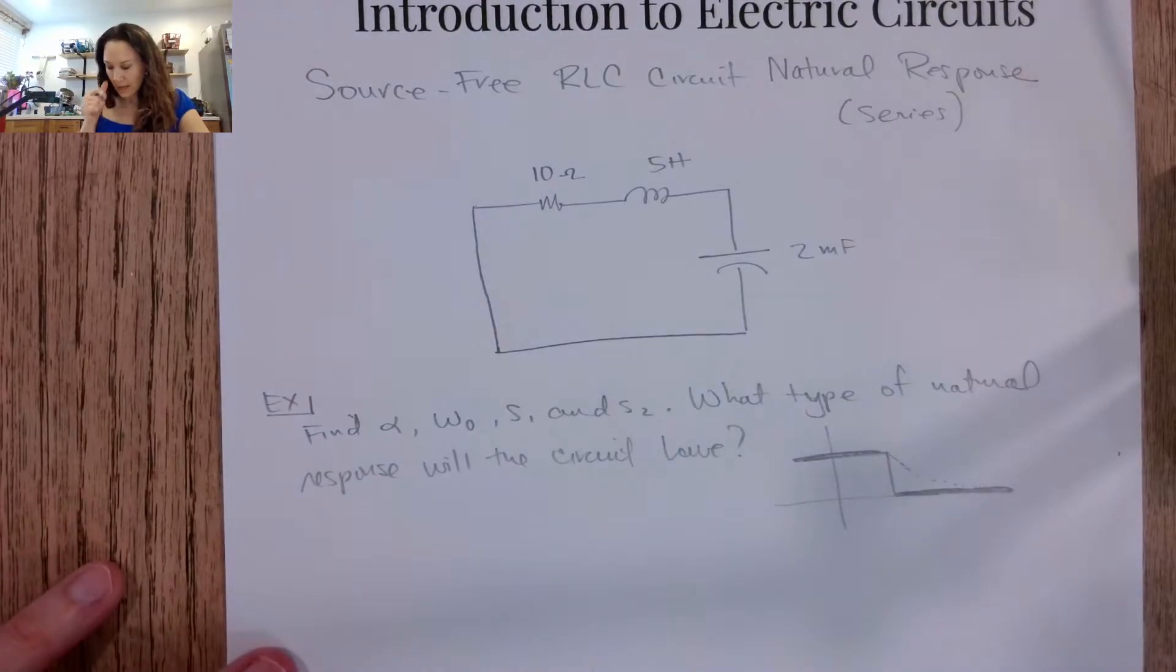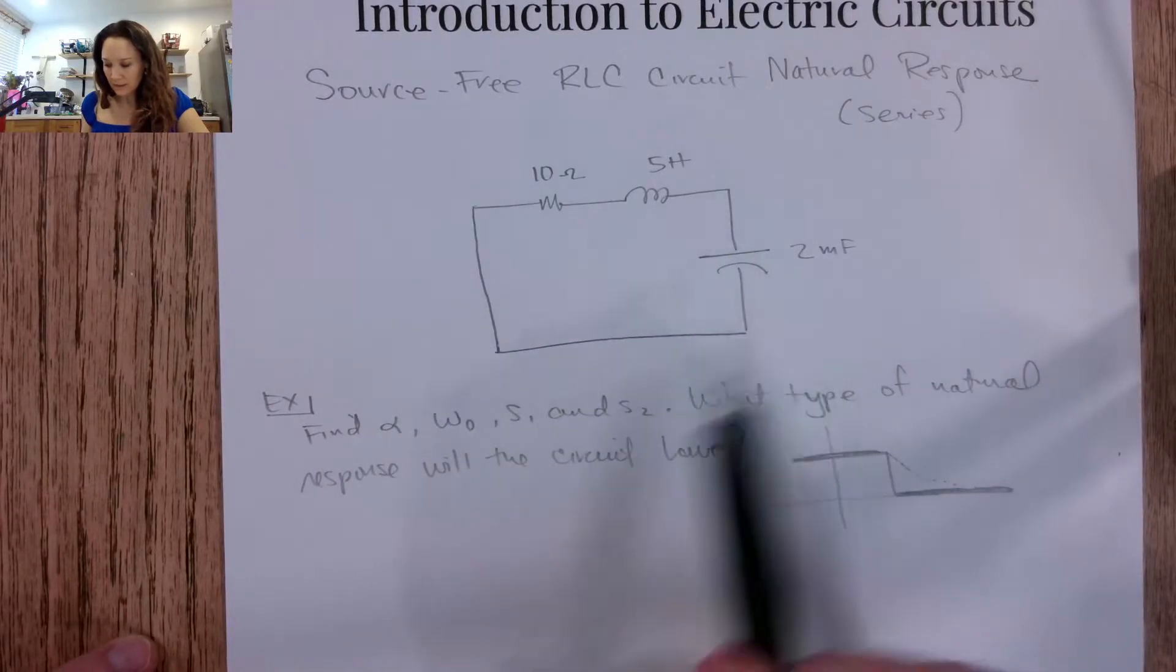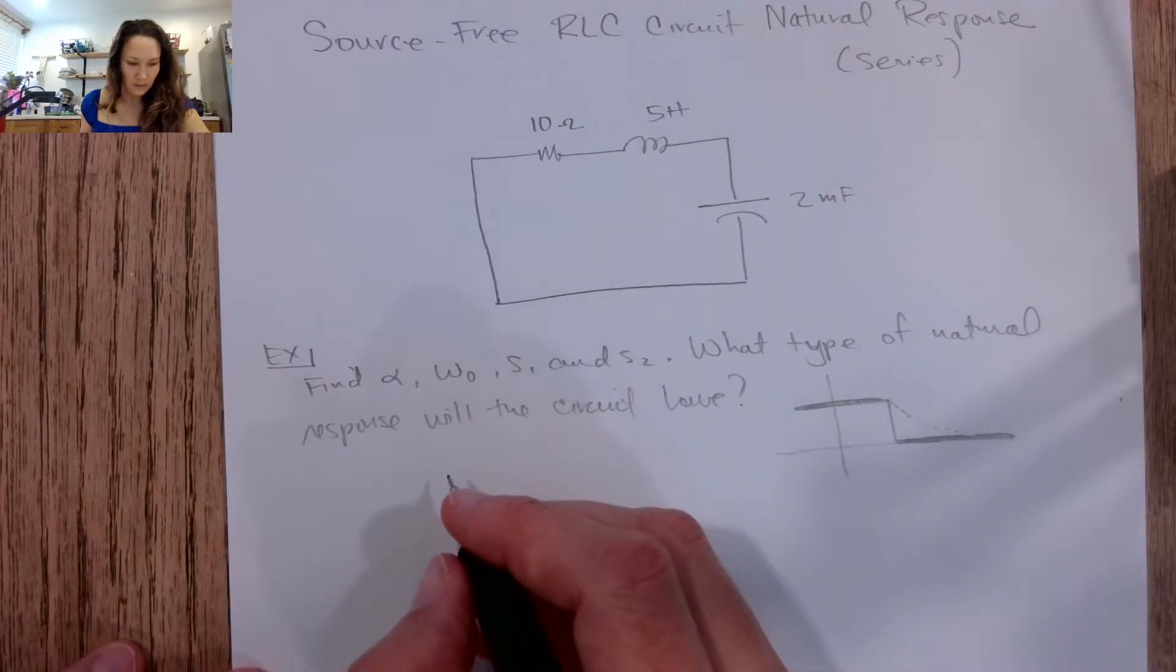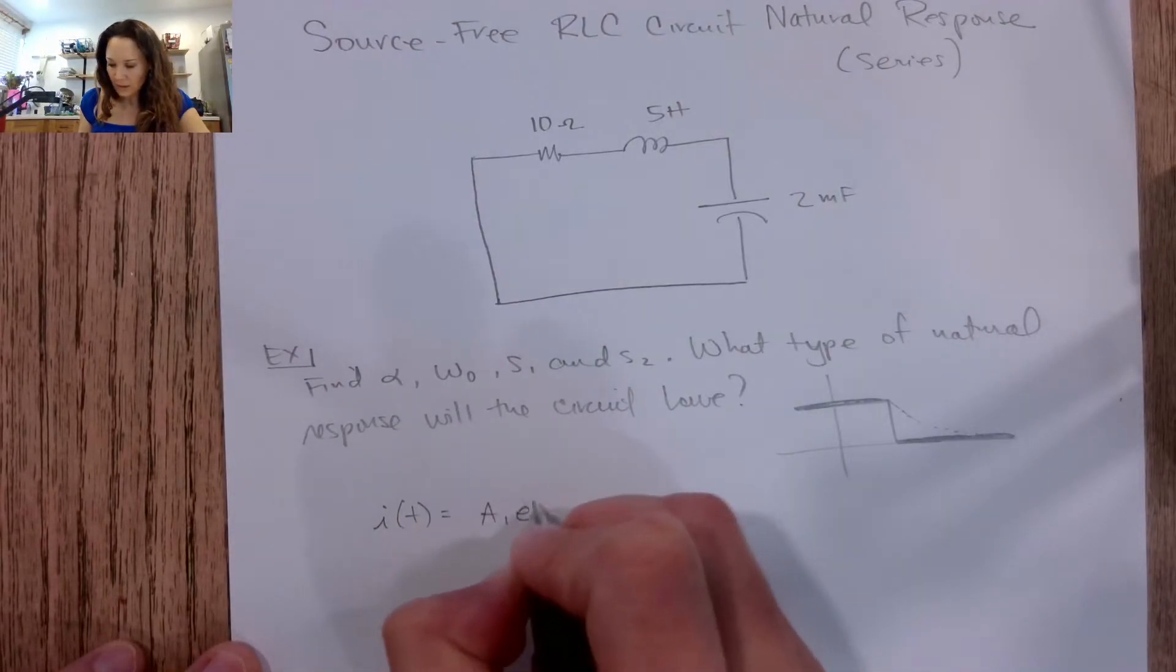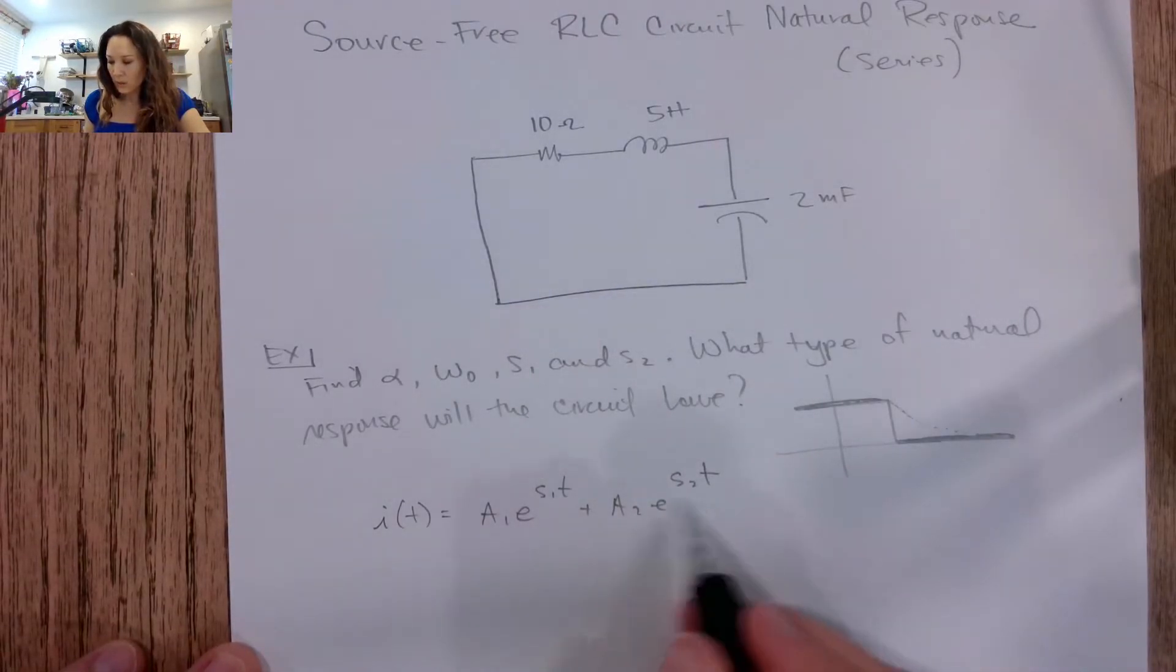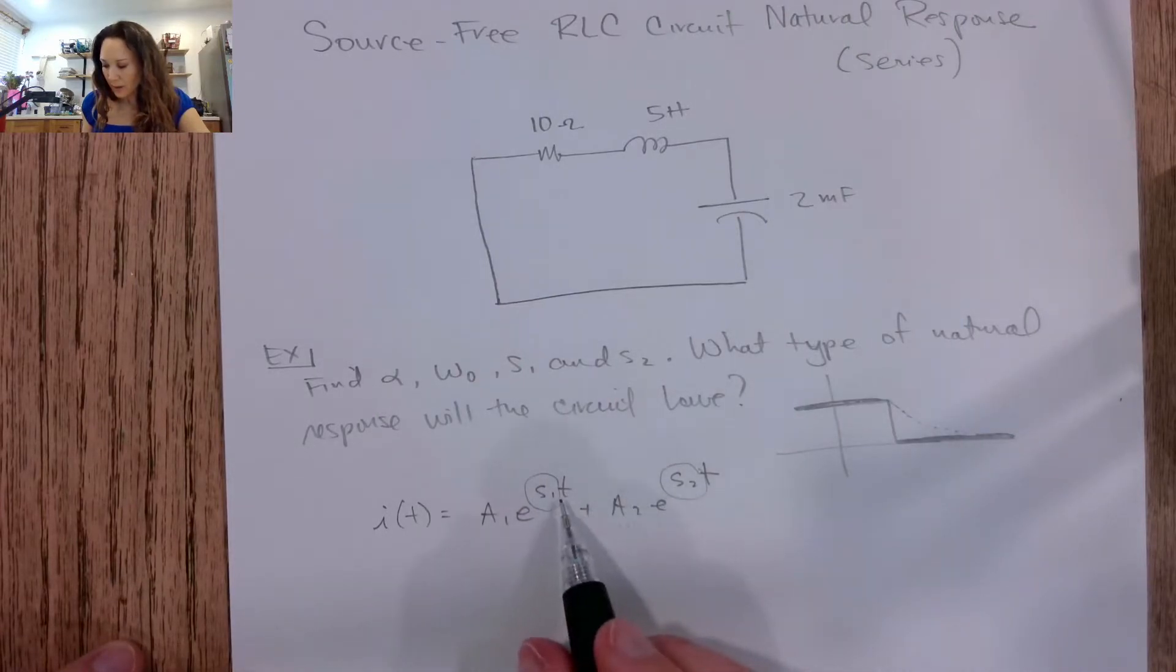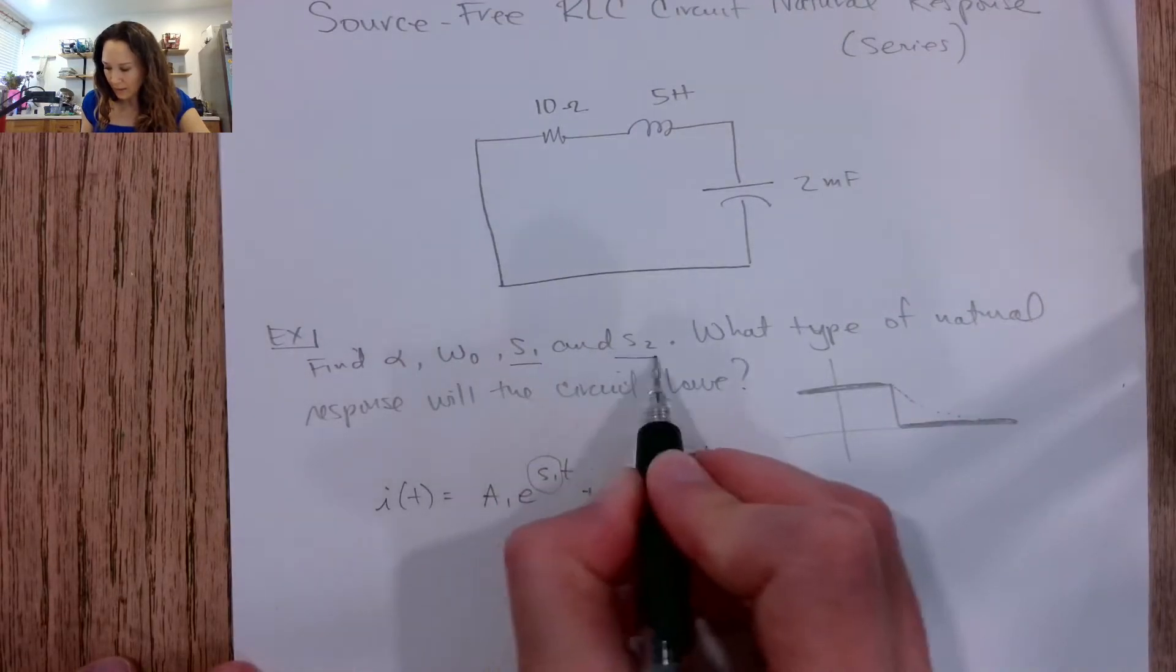We actually have three different cases of what type of natural response we can have here, and that will depend on our values of R, L, and C. So just to kind of refresh your memory, the equation for our solutions is going to be in the form I(t) = A1*e^(S1*t) + A2*e^(S2*t), and we can use initial conditions to find these coefficients here. But these solutions here, the exponential constant being multiplied by our t, this is what we're going to try to find. We're asked to find S1 and S2.